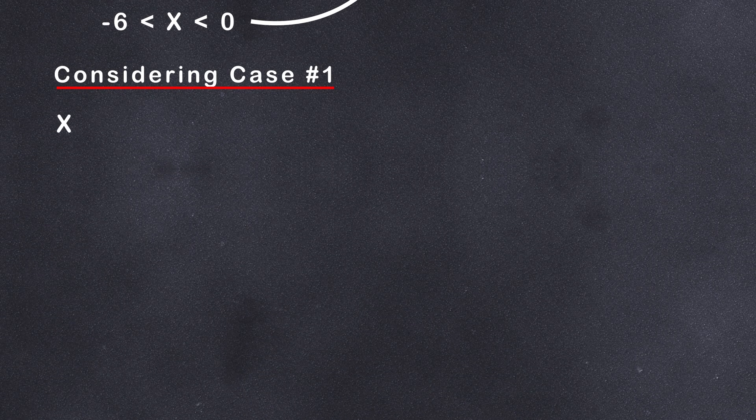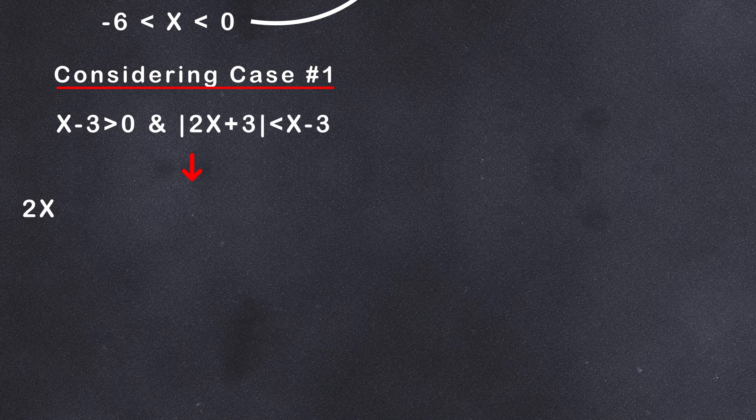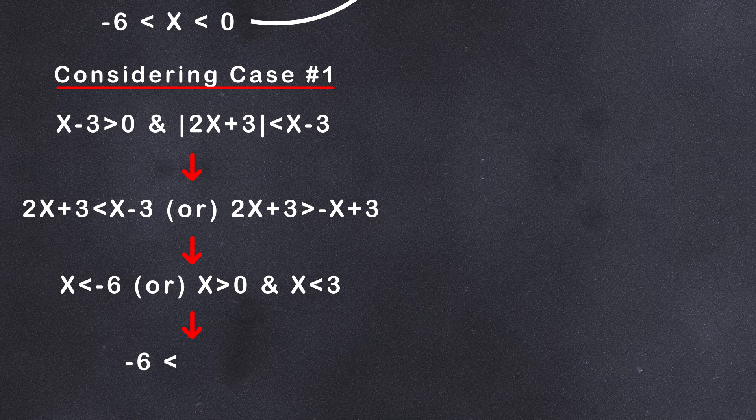Considering case one, x - 3 > 0, and |2x + 3| < x - 3. So 2x + 3 < x - 3, or 2x + 3 > -x + 3, x < -6, or x > 0, and x < 3. So we get the interval -6 < x < 0 for the first case.